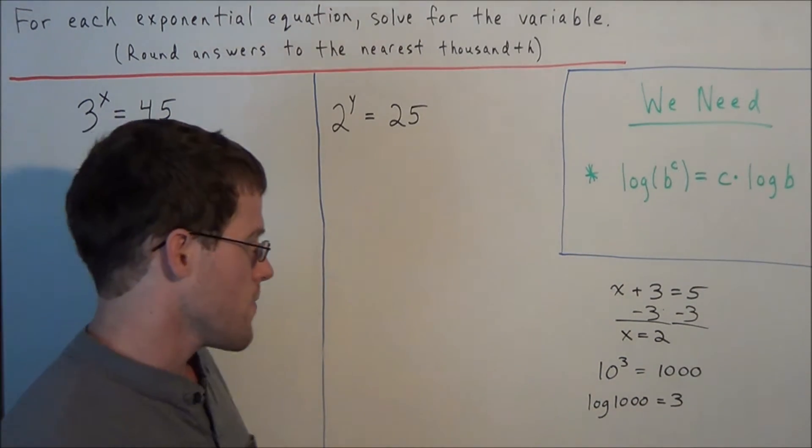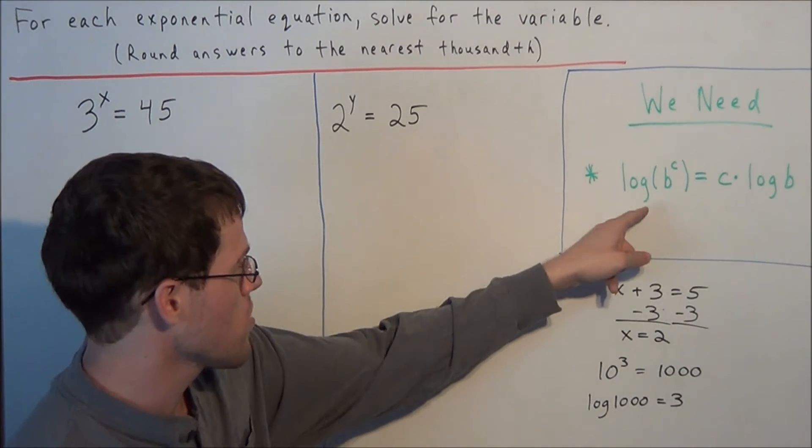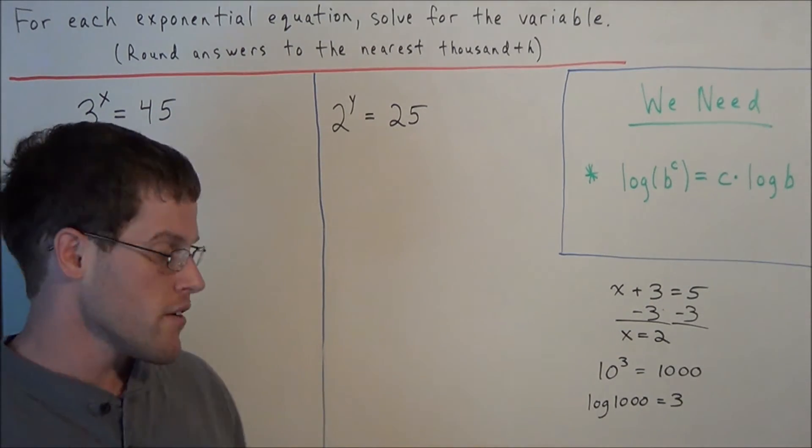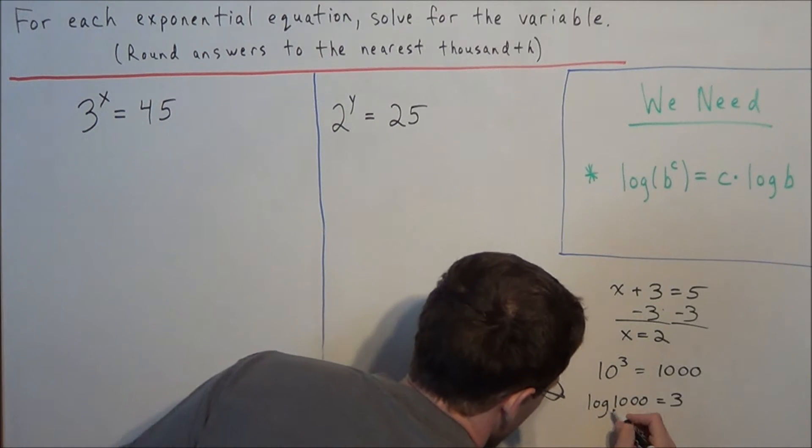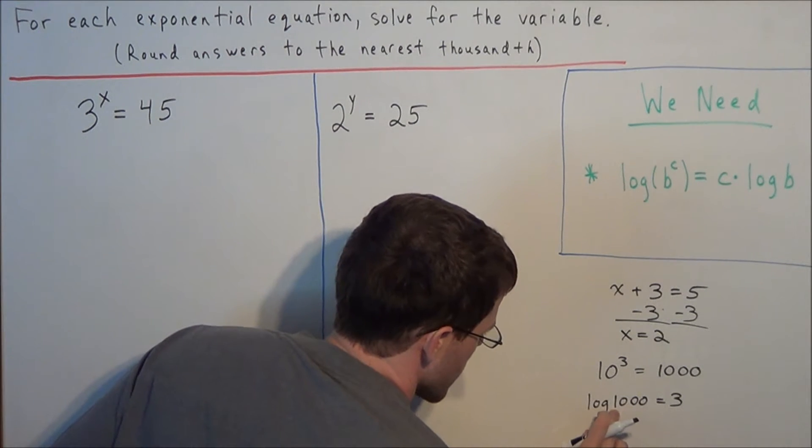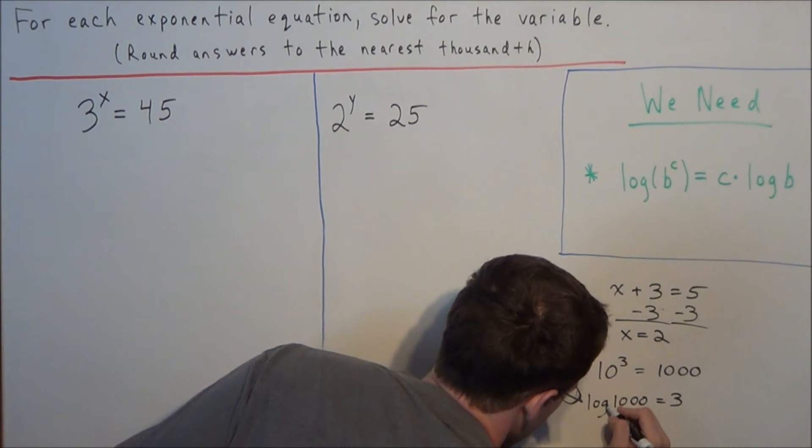And now one last thing before we move on. See how there's no subscript written here? It's just a plain old log for this problem and for this property I have written here. If there's no number written there, it's always assumed to be base 10. For instance, think of there being like a little subscript of 10 right next to that log. But we don't write it because when we don't have a number there, it's implied to be 10 because that's how our number system is built.